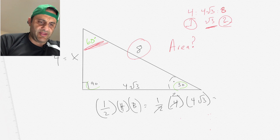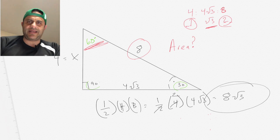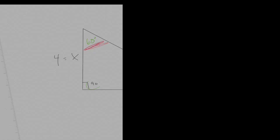That simplifies: the 2 cancels, giving 2 times 4 equals 8, so the area is 8 times the square root of 3. That's the answer! If you want to get better at geometry, practice this kind of problem and you're going to do great.